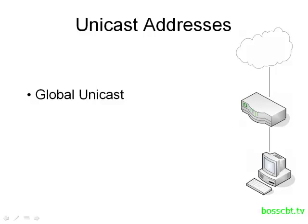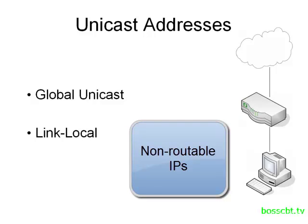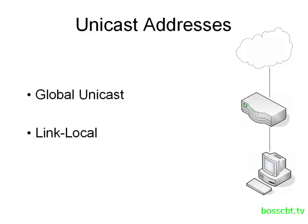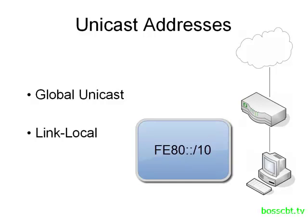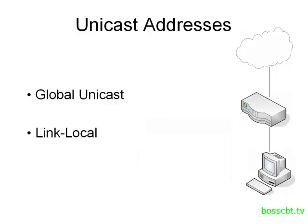The next type of unicast is the exact opposite of the global unicast and it's called the link local. These are non-routed IPs used to send packets to other devices on the same link only. In this diagram, the router would have a link local IP address and so would the PC, and they would use those to send information to and from each other only. The router would never forward packets with a link local address in the IP header. You can easily identify these because they all come from the range FE80::/10. Whenever you see an address beginning with FE80, you immediately know it's a link local IP address.